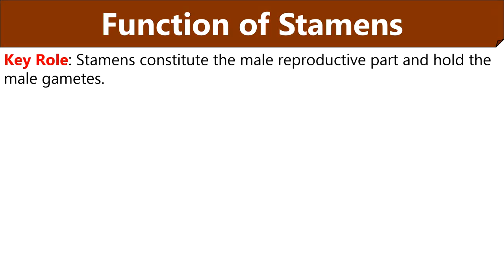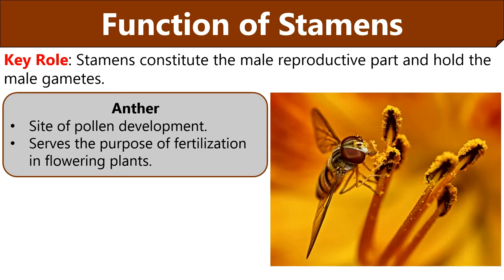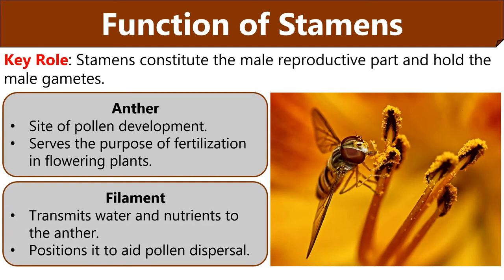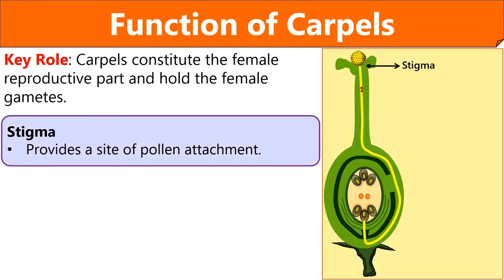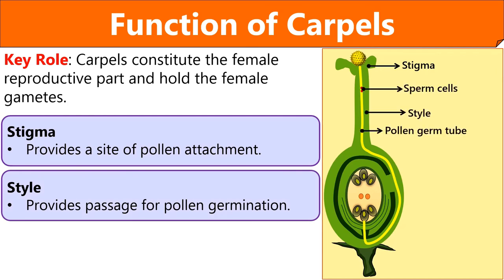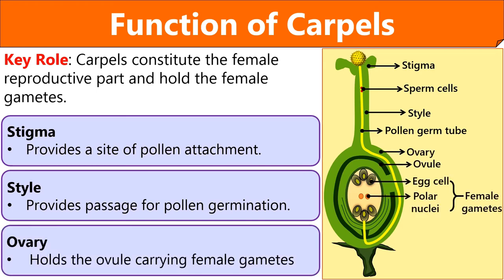The main function of stamens is to hold the male gametes. Anther is the region where pollen grains develop, and when these pollen grains are transferred onto the stigma of the same or another flower, they germinate and fertilize the egg cells. Filament is a thin stalk-like segment of stamen which nourishes the anther by providing water and nutrients, and it also positions the anther to aid pollen dispersal. Carpel's main function is to carry the female gametes. The stigma of a flower is the site of pollen reception, functioning like a sticky platform where the pollen gets attached. Then style provides a passage for pollen tube germination in which the sperm cells travel towards the ovary. Ovary is the sac-like structure that holds the ovule carrying female gametes. The pollen tube penetrates the ovule and the sperm cells fuse with the egg cell to undergo fertilization.